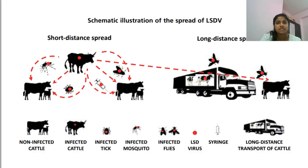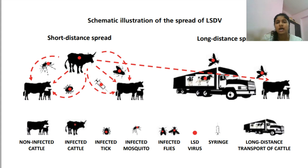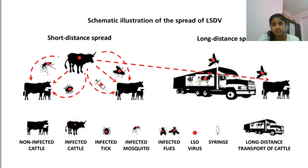This is the schematic illustration of the spread of LSDV. Short distance spread occurs by infected insects — infected mosquitoes and stable flies. Long distance spread occurs when infected cattle are transported.